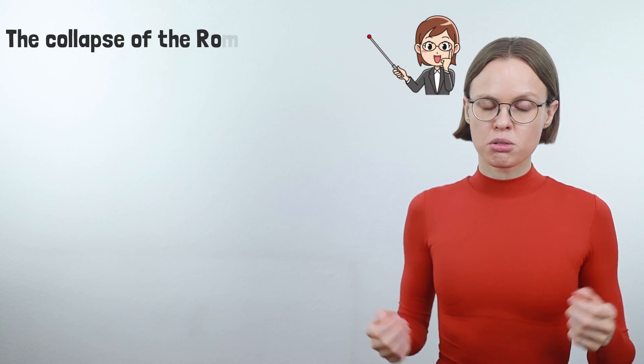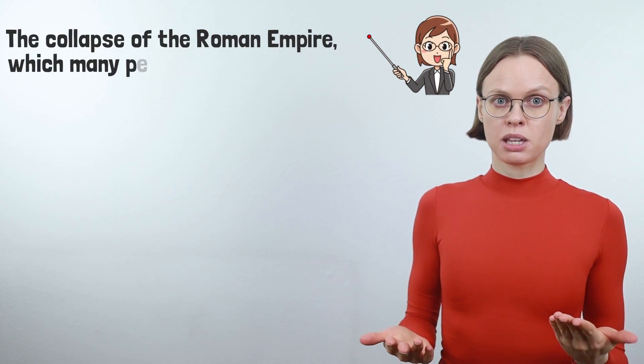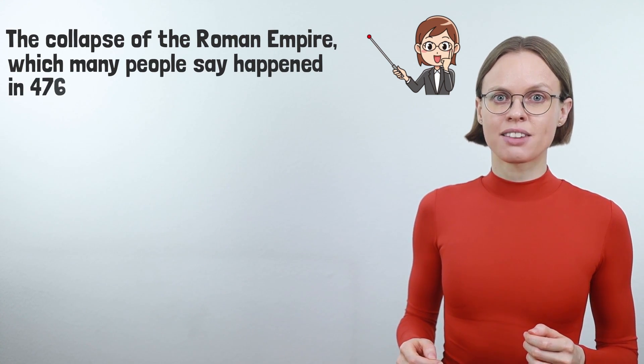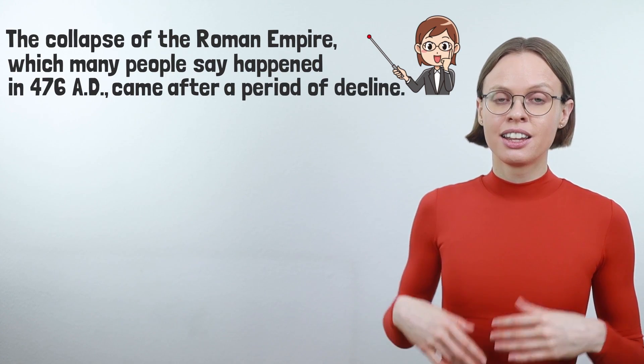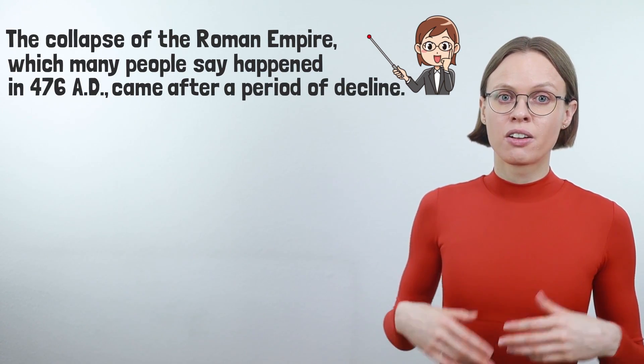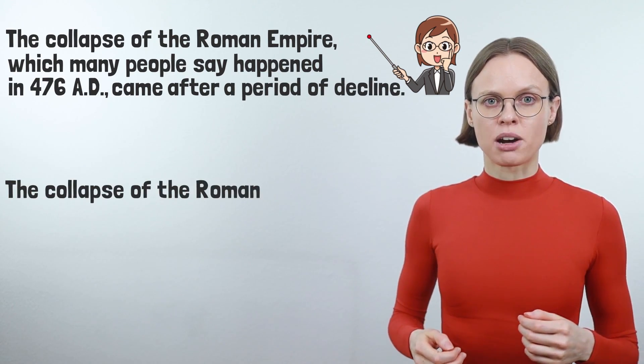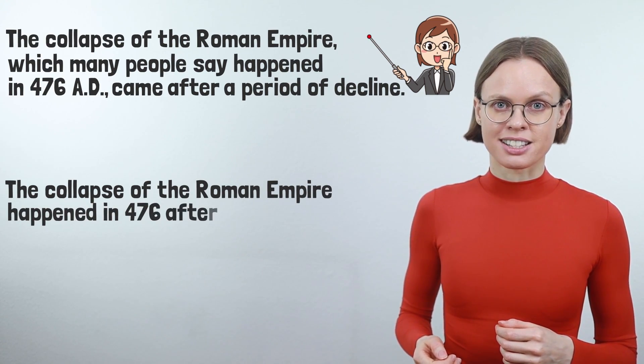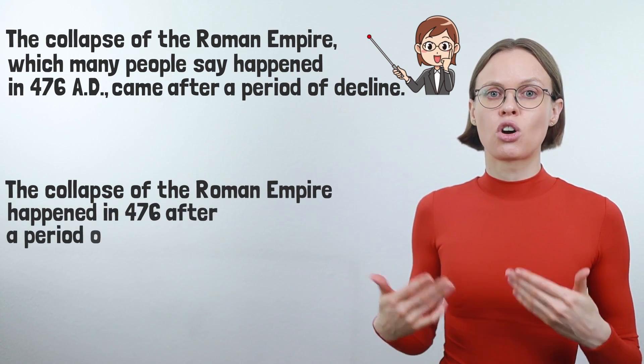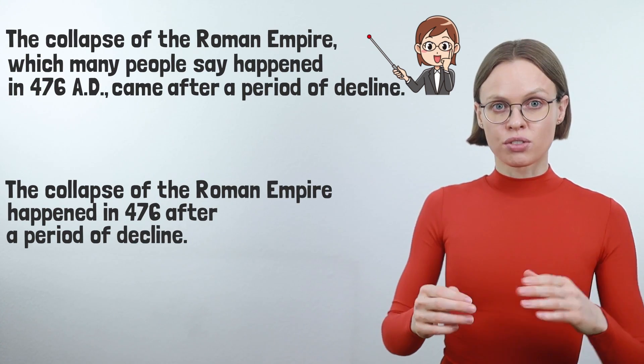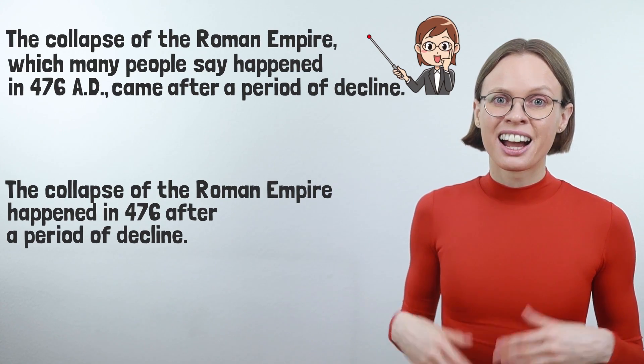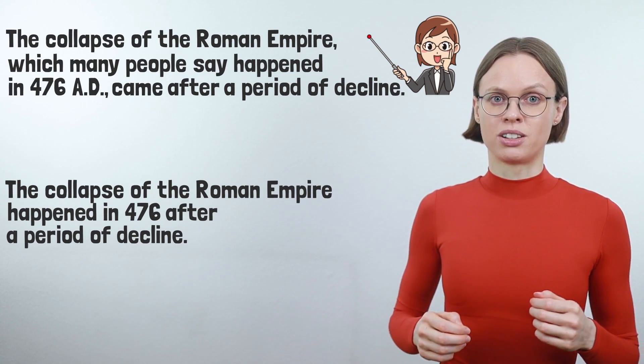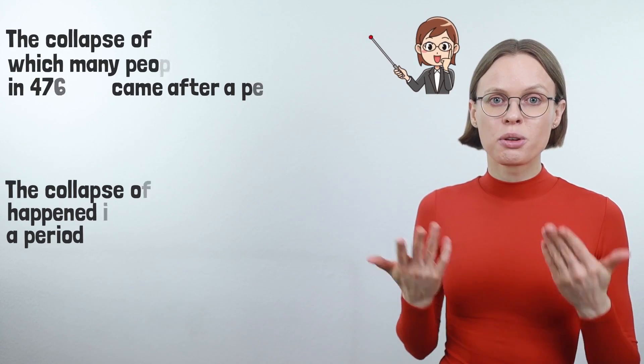Let's say the lecturer says the collapse of the Roman Empire, which many people say happened in 476 AD, came after a period of decline. Your response might include the collapse of the Roman Empire happened in 476 AD, after a period of decline. Now, the TOEFL examiner knows that you can copy information you hear. However, that response doesn't show that you actually know the meaning.